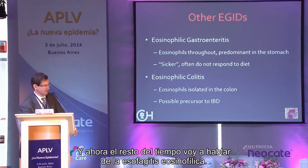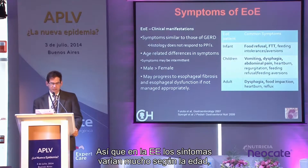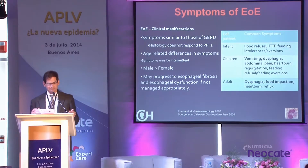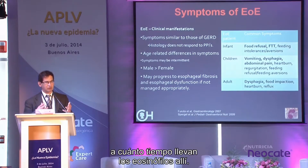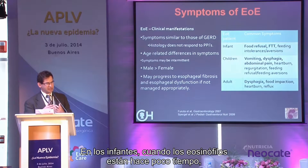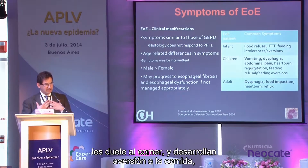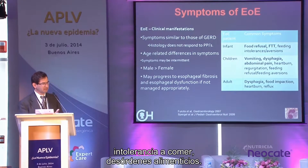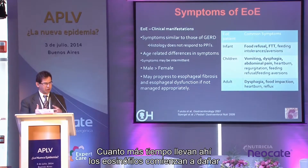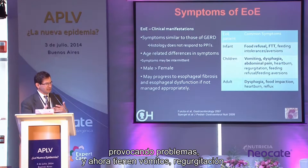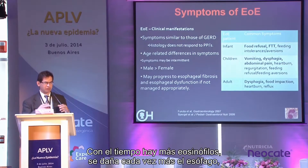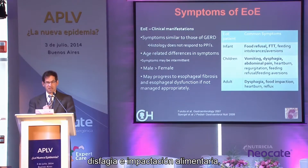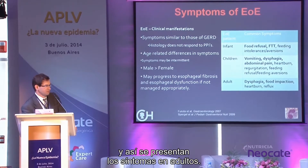Eosinophilic esophagitis symptoms vary considerably by age, likely reflecting how long the eosinophils have been present. In infants, eating hurts, so they present with refusal to eat, feeding intolerance, and feeding disorders. As they get a little older, eosinophil-induced damage progresses, leading to vomiting, regurgitation, and abdominal pain. Over time, increasing damage causes true fibrosis, strictures, dysphagia, and food impactions — which is how adults typically present.